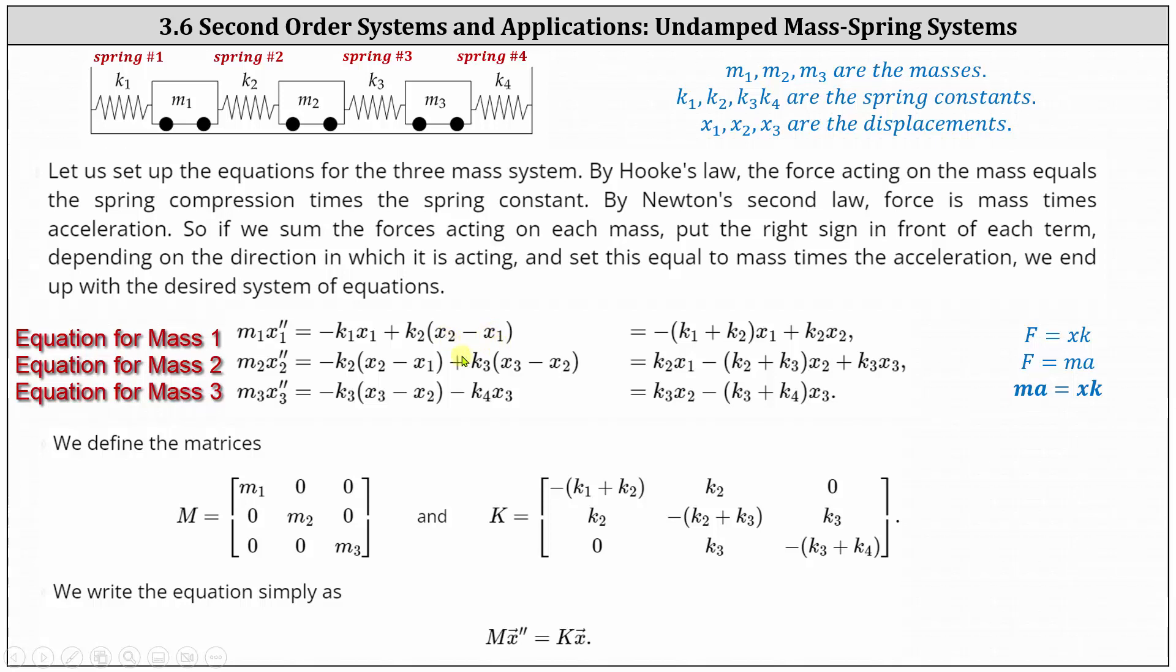And now for the second equation, we have M2 times X2 double prime, which again is mass times acceleration, equals on the right, the right side is similar to the right side of the first equation.